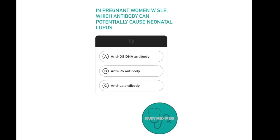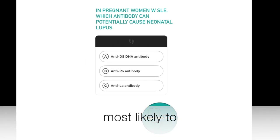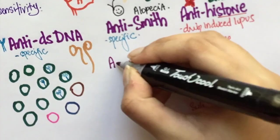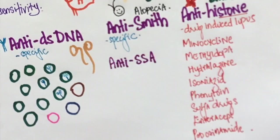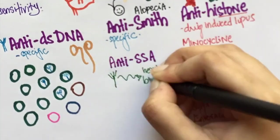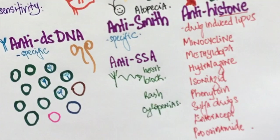In pregnant women with SLE, which antibody can potentially cause neonatal lupus? Option A anti-dsDNA antibody, option B anti-RO antibody, option C anti-LA antibody. The answer is anti-RO antibody, also known as anti-SSA antibody. This antibody can cross the placenta and attack the fetus. Hence, pregnant women with lupus who have increased levels of this antibody increase the risk of their baby having neonatal lupus. Neonatal lupus is characterized by heart block, rash, and cytopenias.